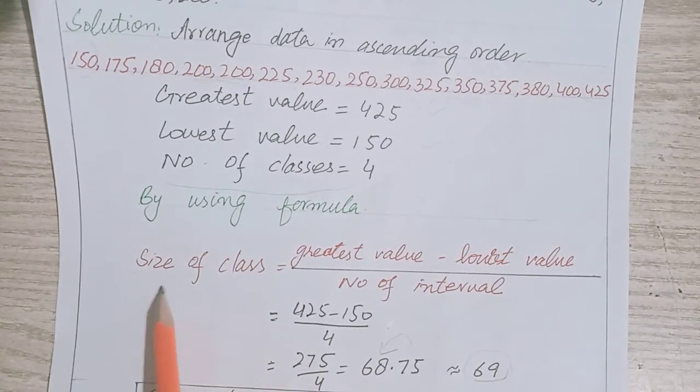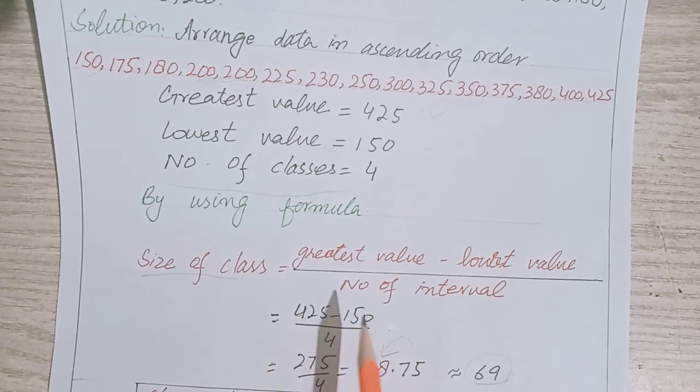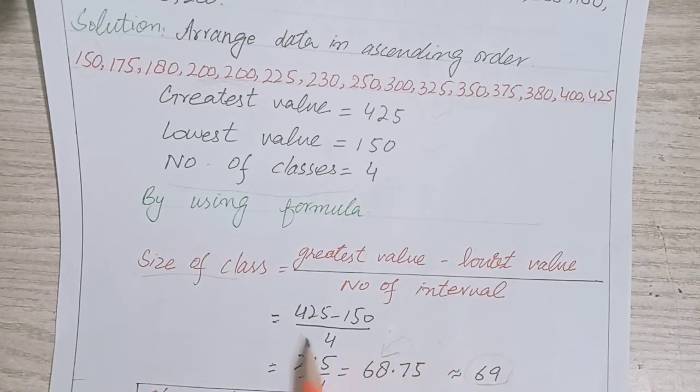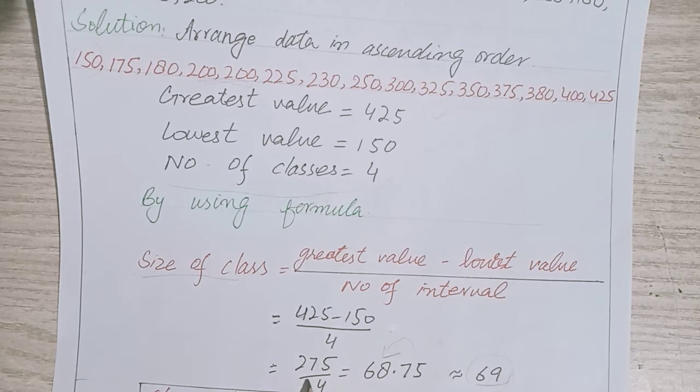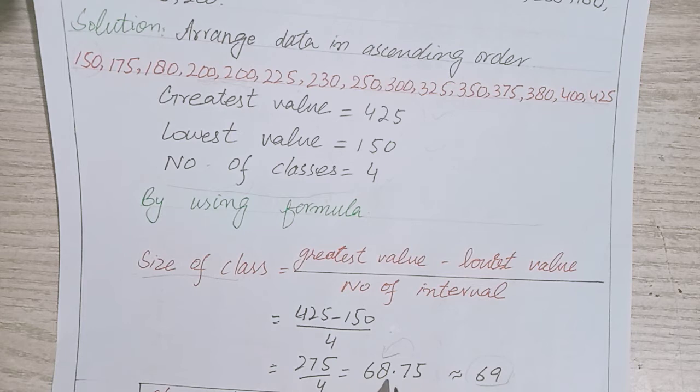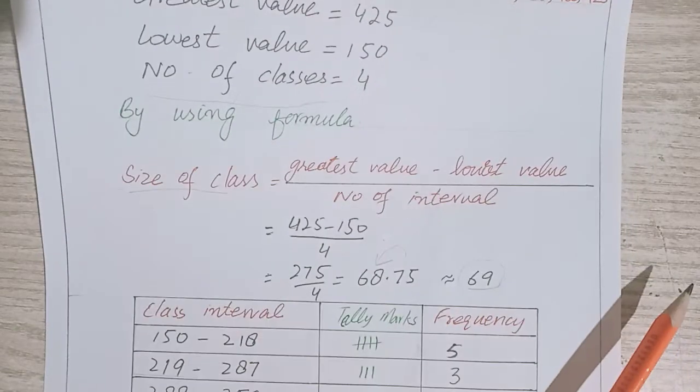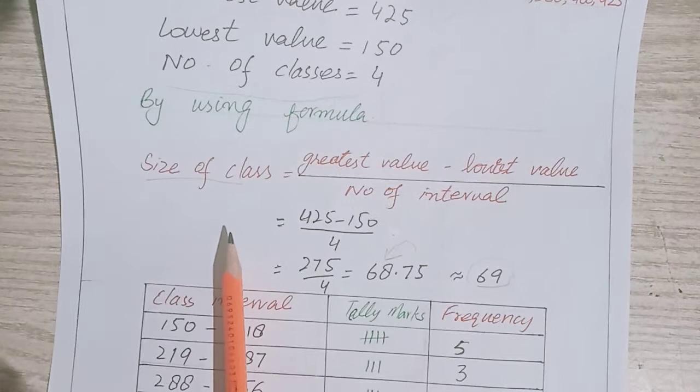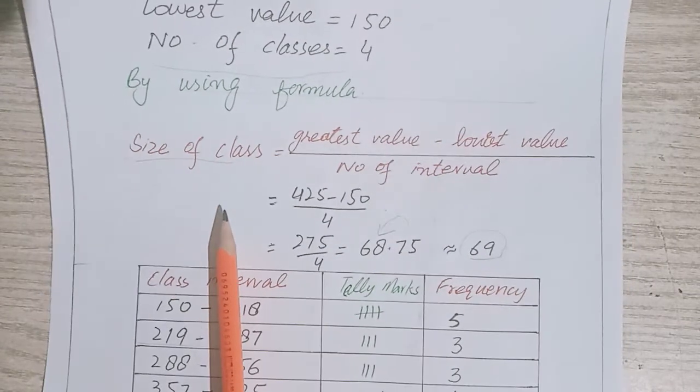The formula for class size or class interval is: greatest value minus lowest value divided by number of intervals. So 425 minus 150 divided by 4. When we subtract these values we have 275, then divide by 4 to get 68.75. After rounding, the approximate value is 69. Now we have class interval of 69.